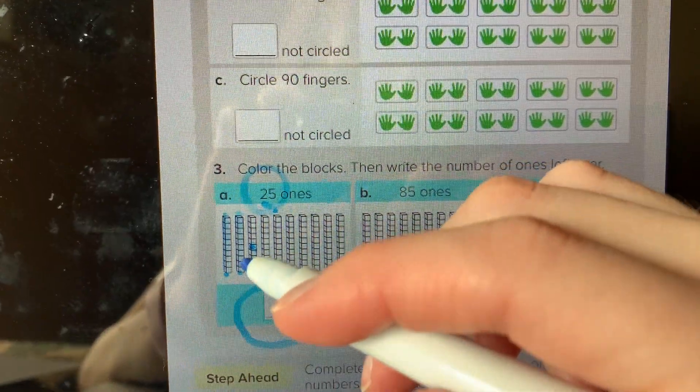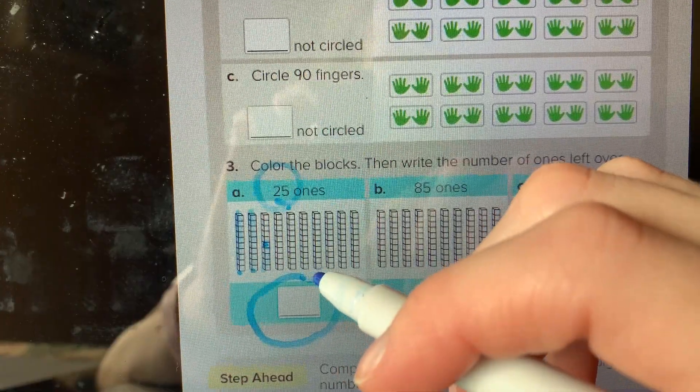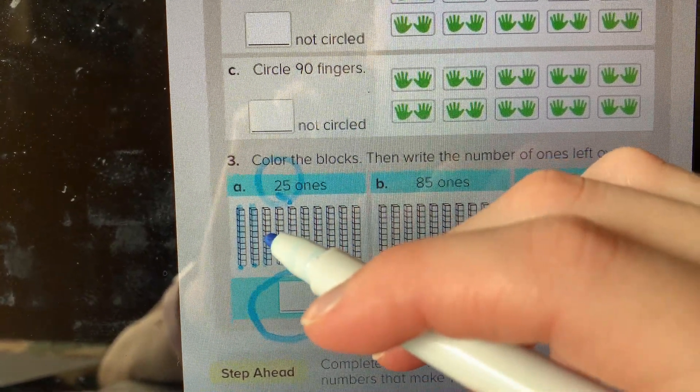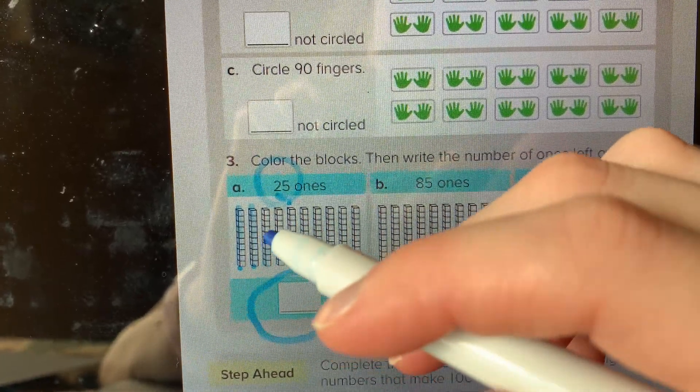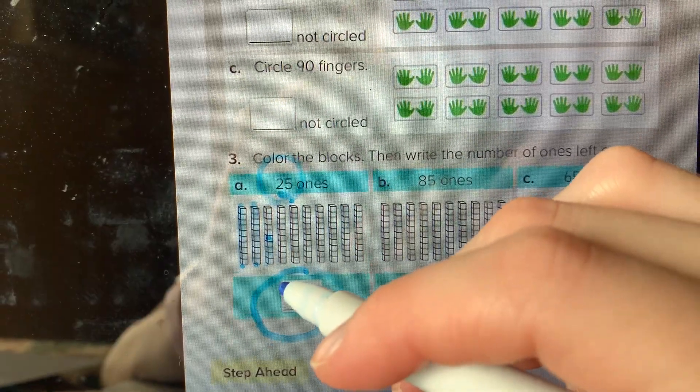Now to get the answer for the rest I count the tens blocks that aren't colored: 10, 20, 30, 40, 50, 60, 70, and then I count these little five blocks. So 70, 1, 2, 3, 4, 5. 75 is my answer.